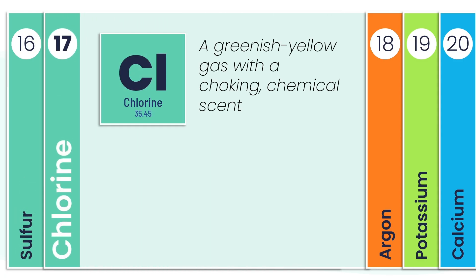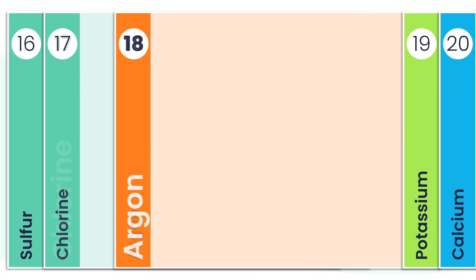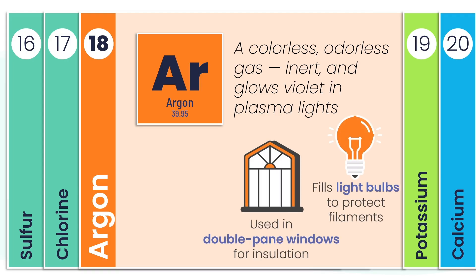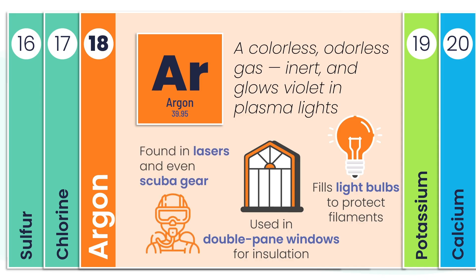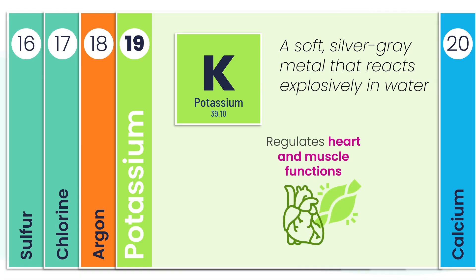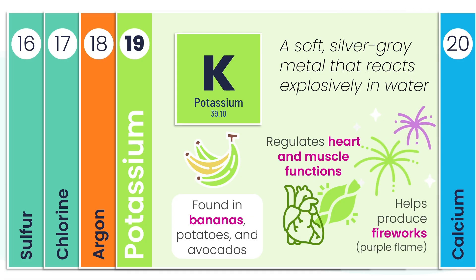Chlorine is a greenish-yellow gas with a sharp chemical scent you've probably smelled in a pool. It's a powerful disinfectant, used to clean water, make PVC plastics, and found in bleach and other cleaning products. Argon is a colorless, odorless, and totally unreactive gas — but put it in plasma lights and it glows a stunning violet. It's used to protect light bulb filaments, insulate double-pane windows, and shows up in lasers and scuba gear. Potassium is a soft silver-gray metal, but drop it in water and it reacts explosively. Inside the body, it's essential — it supports heart and muscle function, shows up in foods like bananas and potatoes, and gives fireworks that brilliant purple glow.